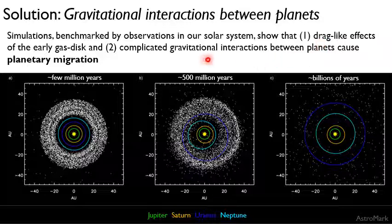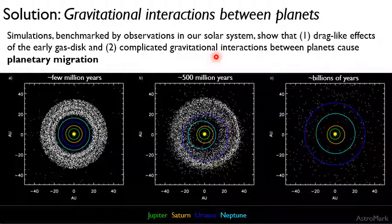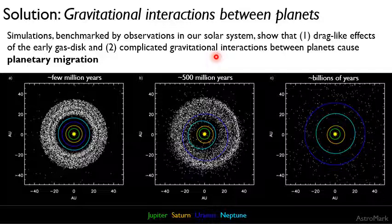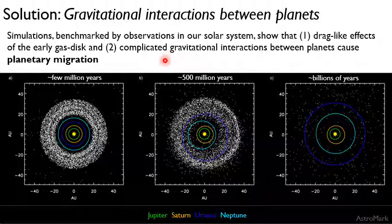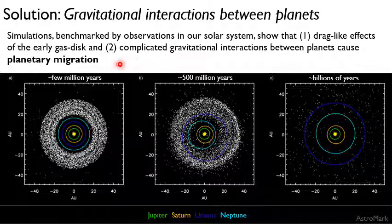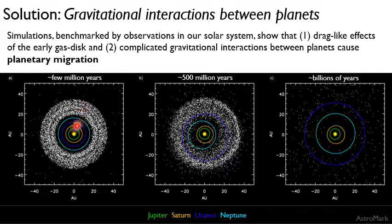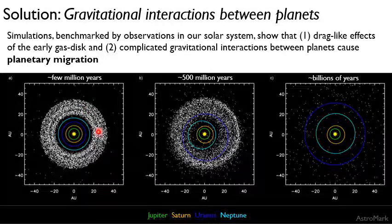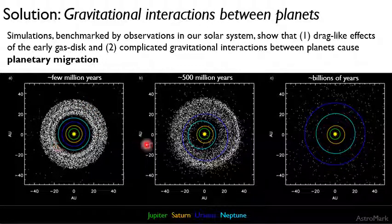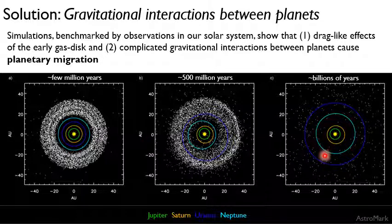Also, what can happen is you have gravitational interactions between the planets. And those can cause planets to move inward or outward. And the details can get pretty complicated. And to be honest, I don't know them to any great length. So I can't tell you exactly how it works. But you do these simulations where you have gravitational interactions. And our solar system, for instance, can go from looking like this picture here to something more like the picture we have today.